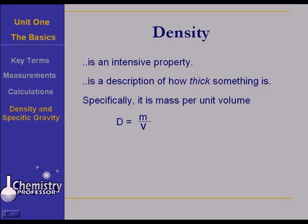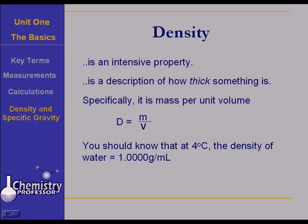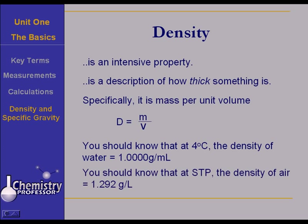Now there are a couple of densities that you really do need to know. You need to know that at approximately four degrees Celsius, the density of water is 1.0000 grams per milliliter. Most people probably have that tucked away in their brains, but did you know that at STP, standard conditions of temperature and pressure, the density of air is 1.292 grams per liter? You should know both of these. These are intensive properties that are also standard.